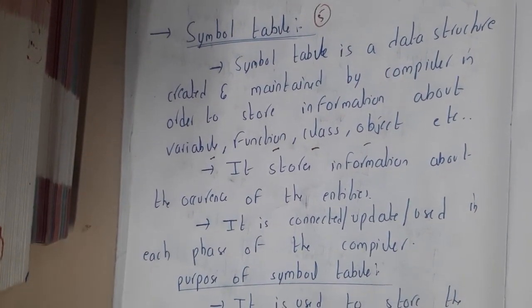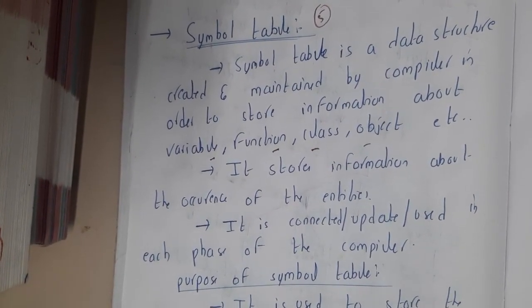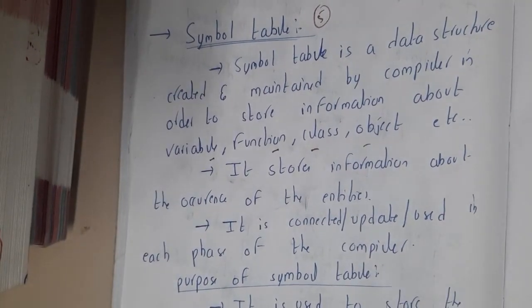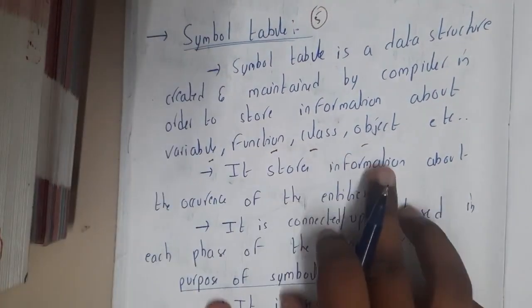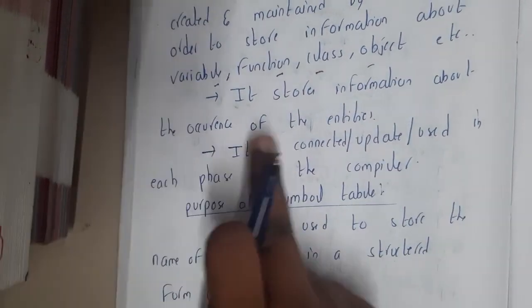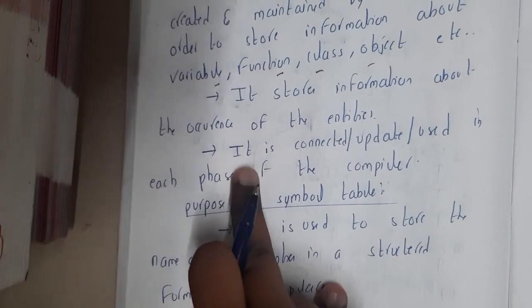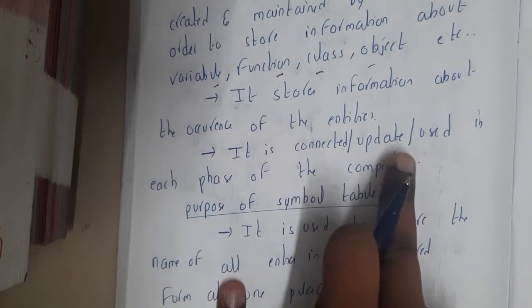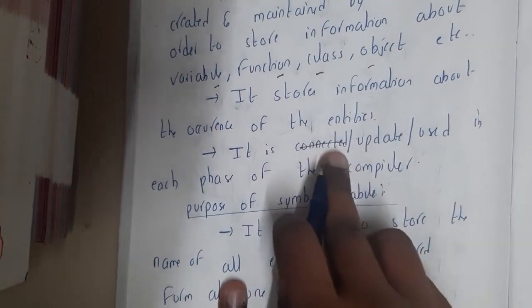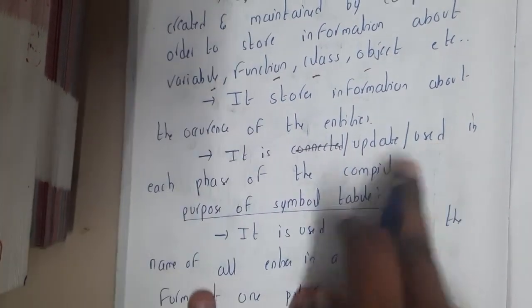Even functions, classes, objects, and everything can be stored there. It stores information about the occurrence of entities. It can be created, connected, updated, edited, and used in each phase of the compiler.